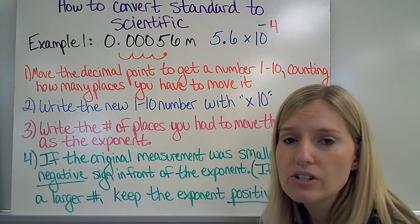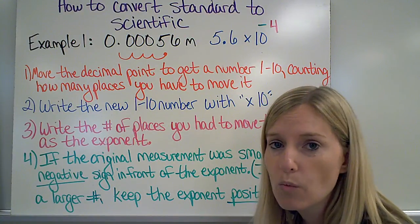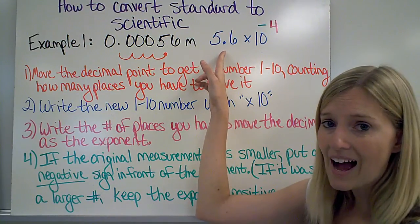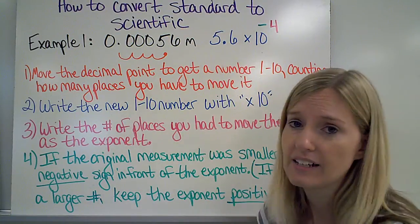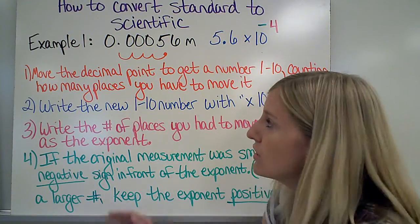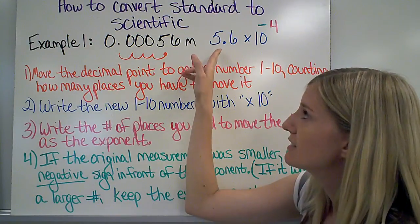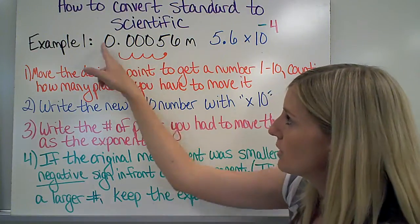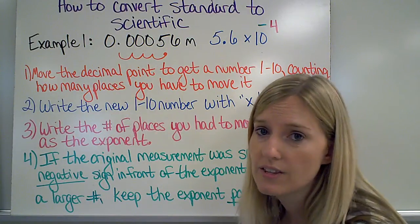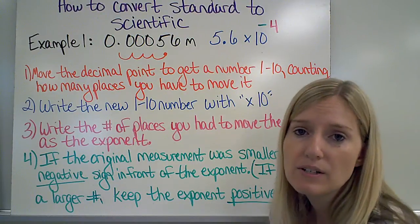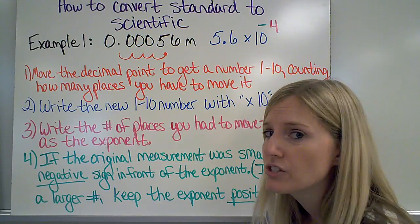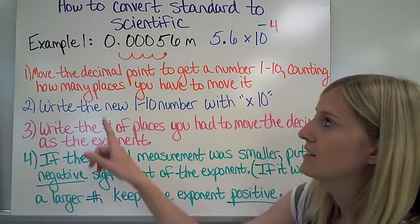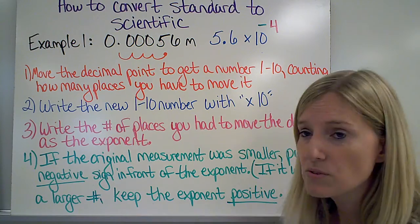The last thing I need to do is to look at what the original measurement was. So, if it was smaller than the 1 through 10 number I got, I need to put a negative sign in front of that exponent. So 0.00056 is less than 5.6. That's why I have a negative sign. If that original number was larger than my 1 through 10 number, then that would need to stay positive by just leaving it as a 4. I wouldn't put a positive sign in front of it. But in this case, it's smaller. So that's where the negative sign comes from.